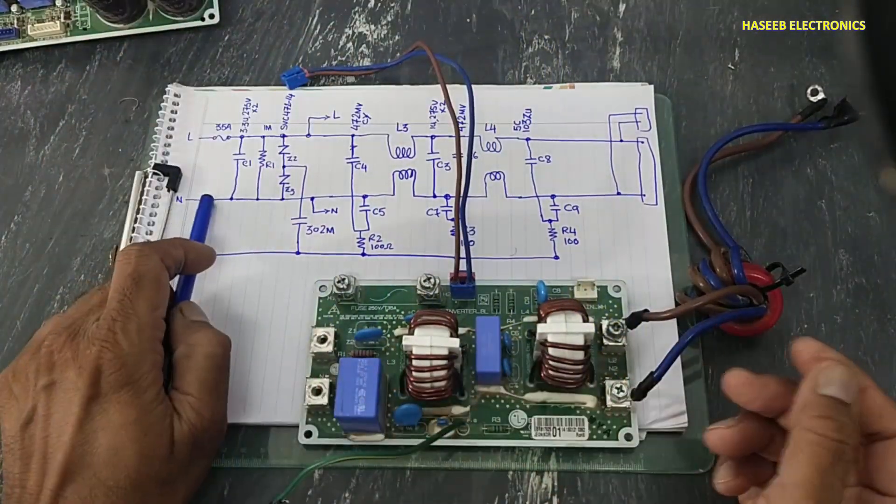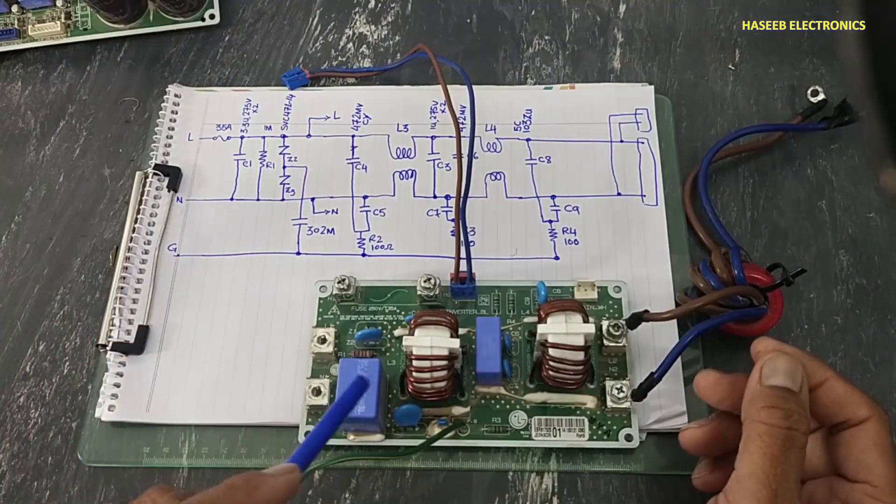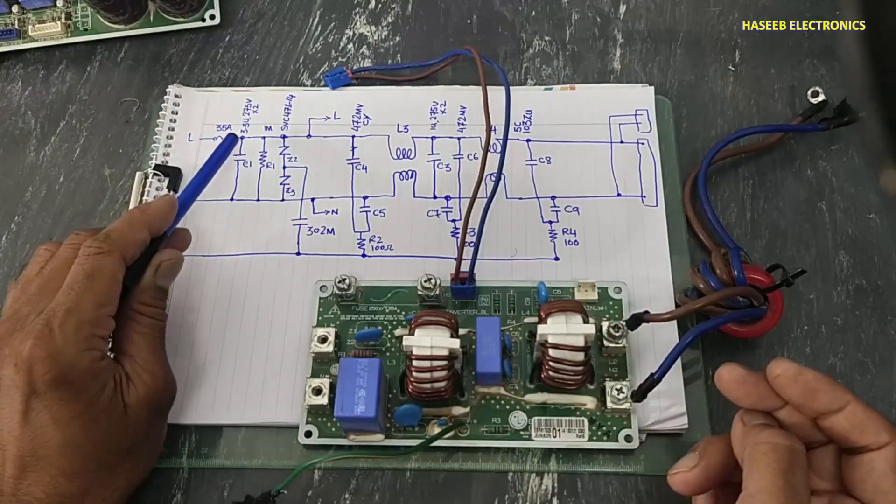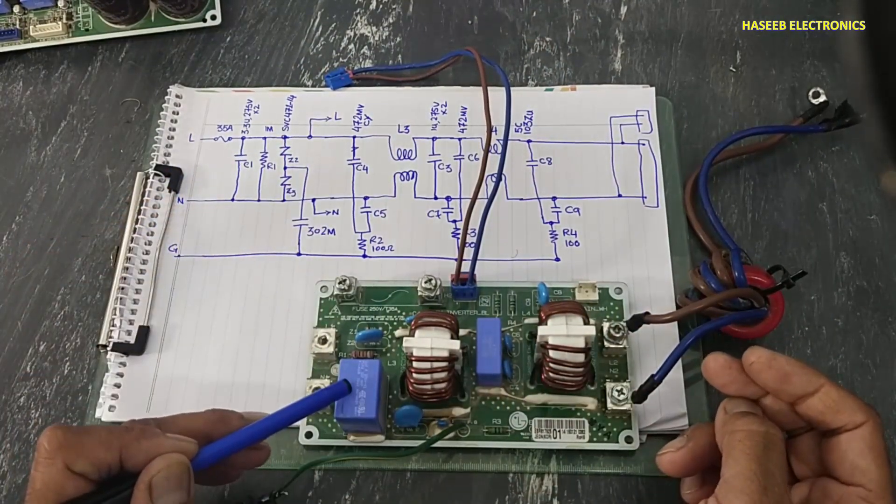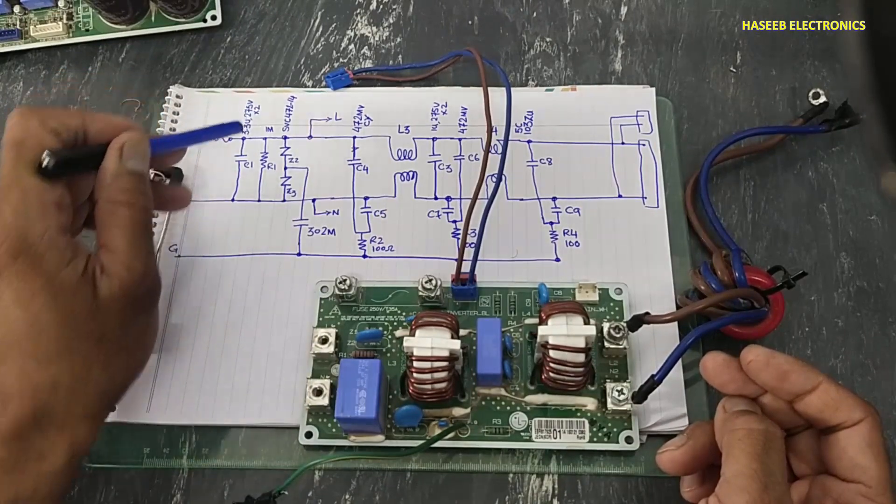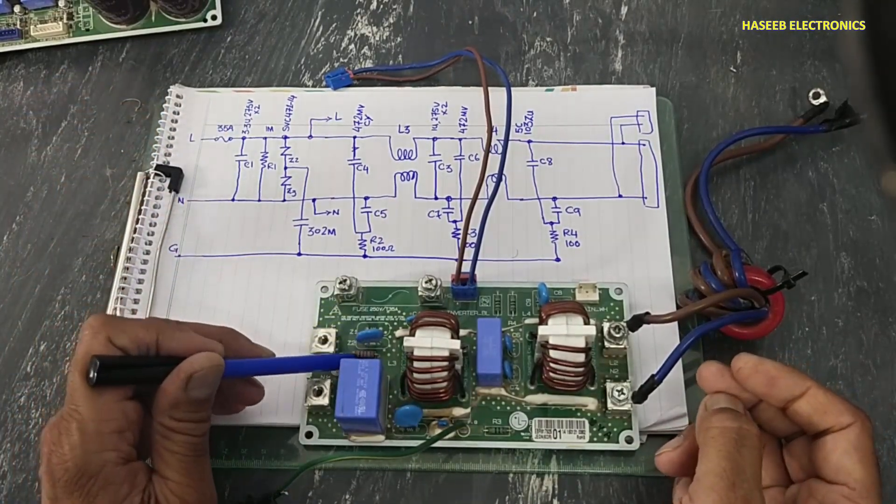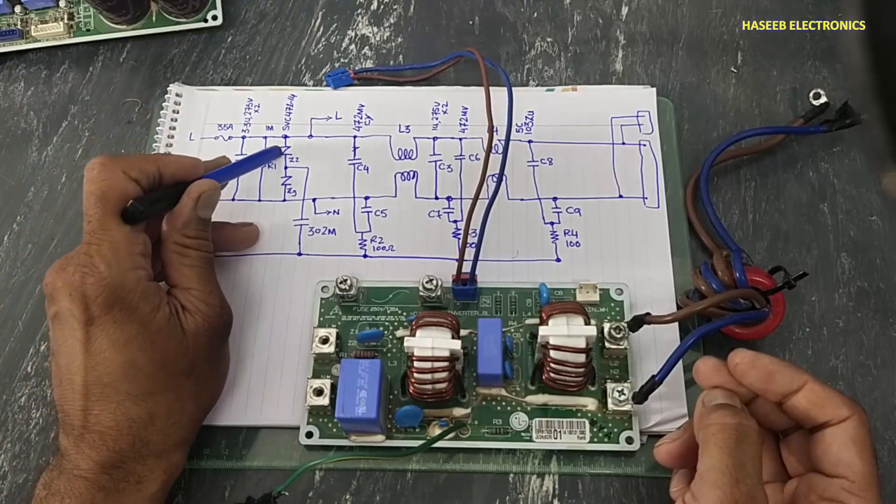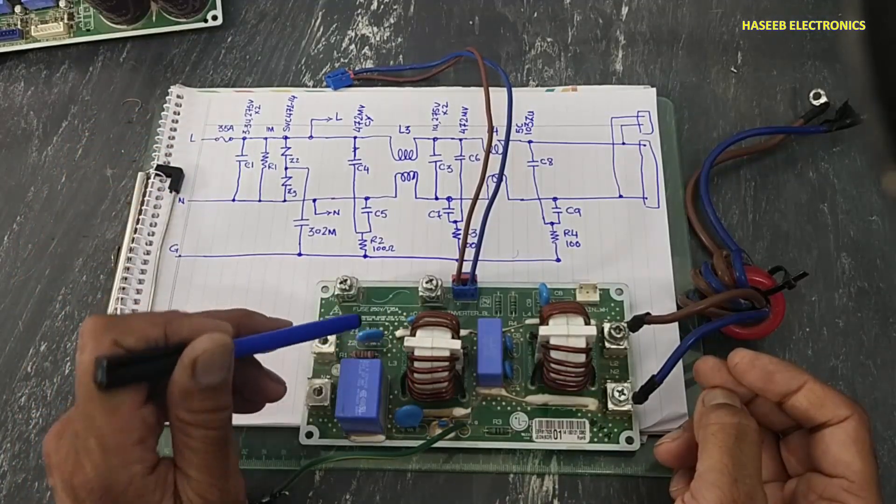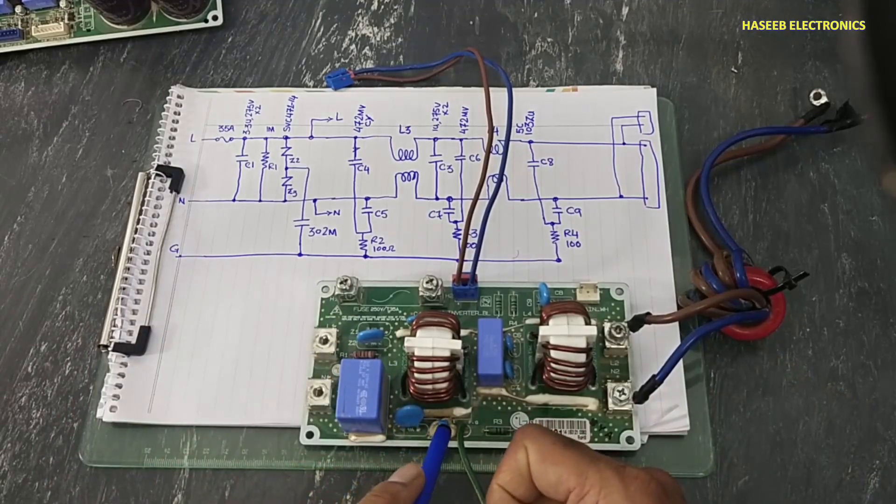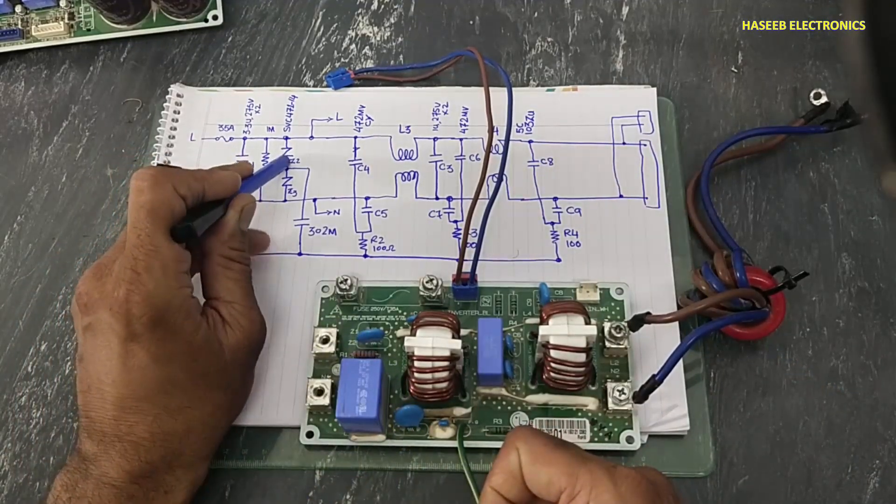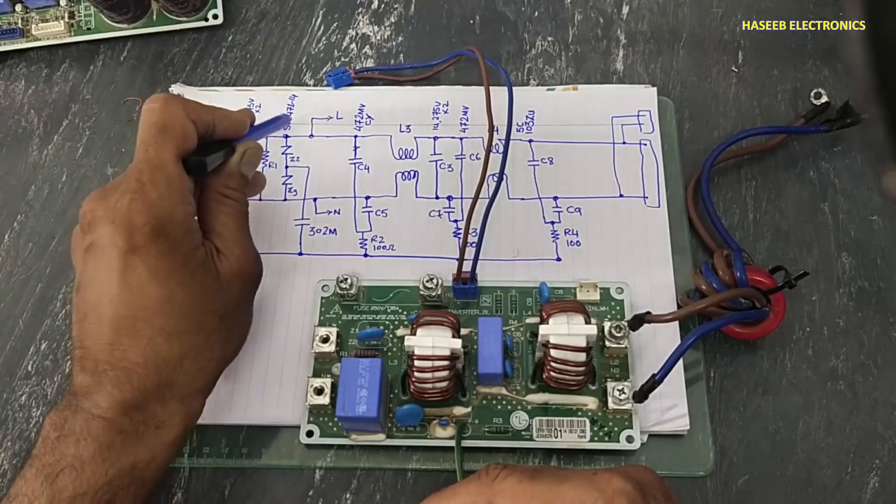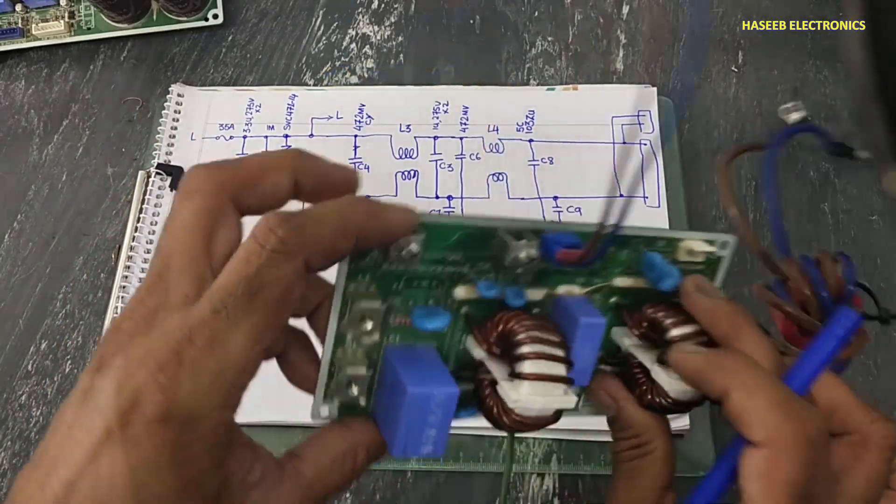This blue wire is directly out. Then we have C1 capacitor that is X2 capacitor 3.3 microfarad 275 volts. Then we have this resistor one megaohm. Then we have two MOVs Z2 Z3, Z2 and Z3 in series. In the center point 302M it is surge arrestor here. These components are connected between line and neutral.